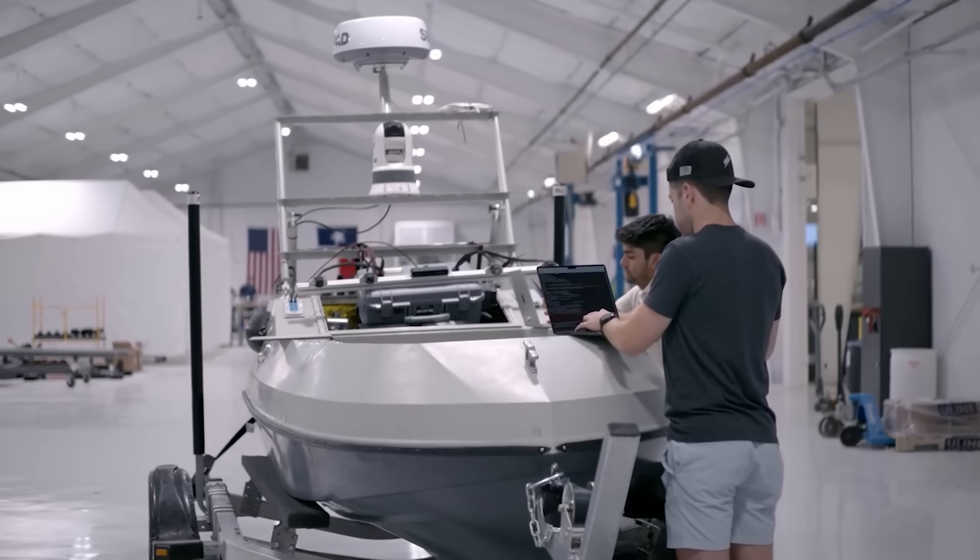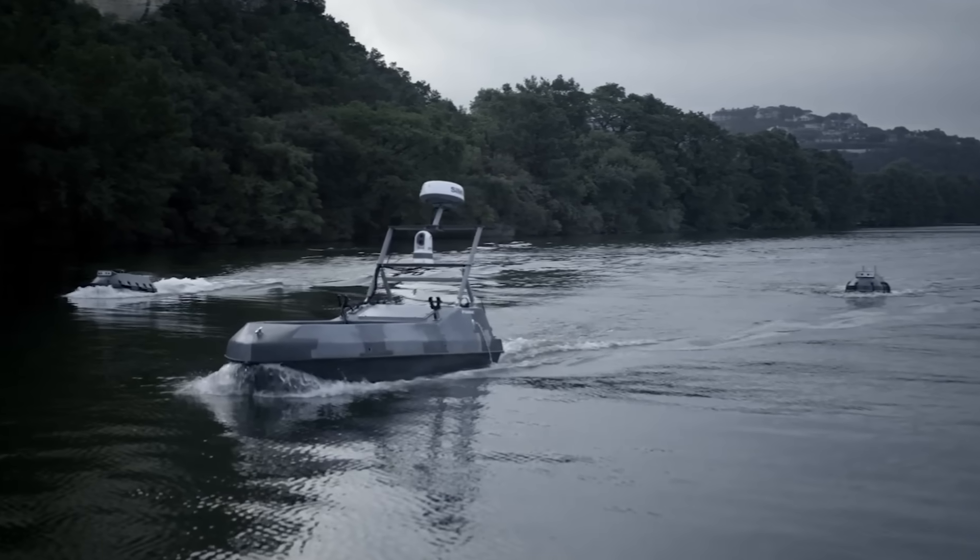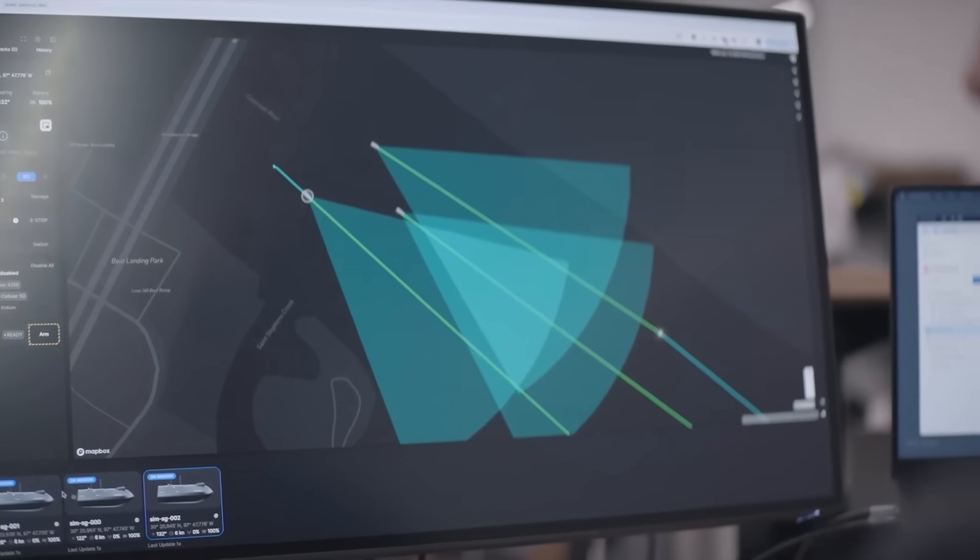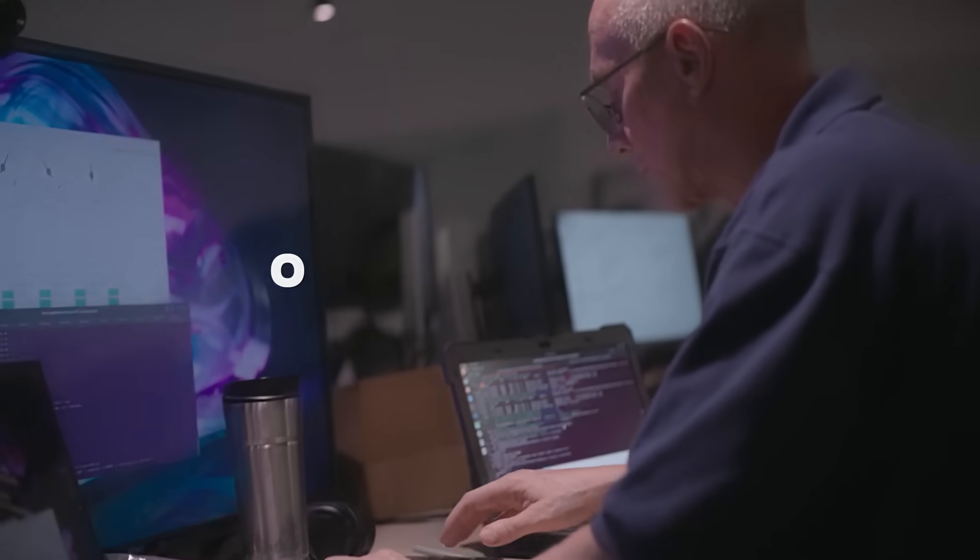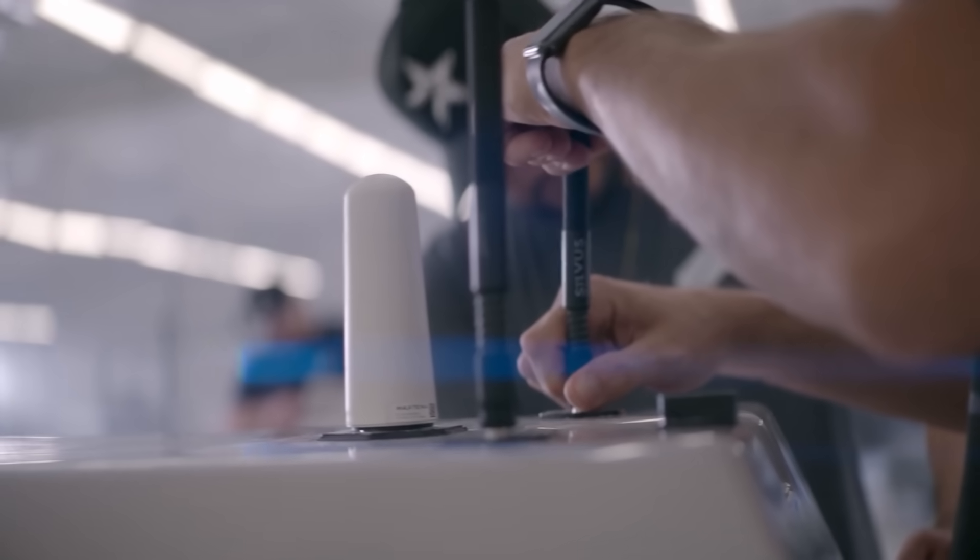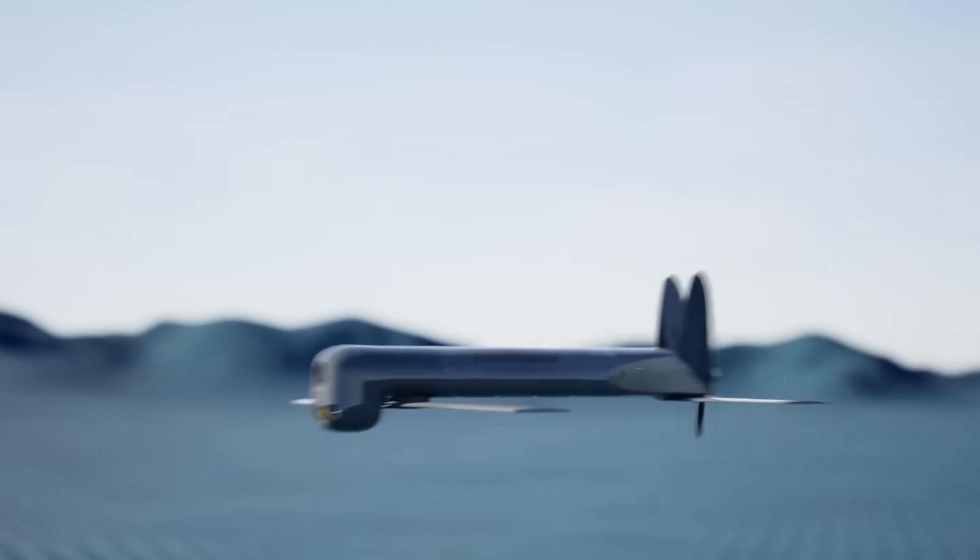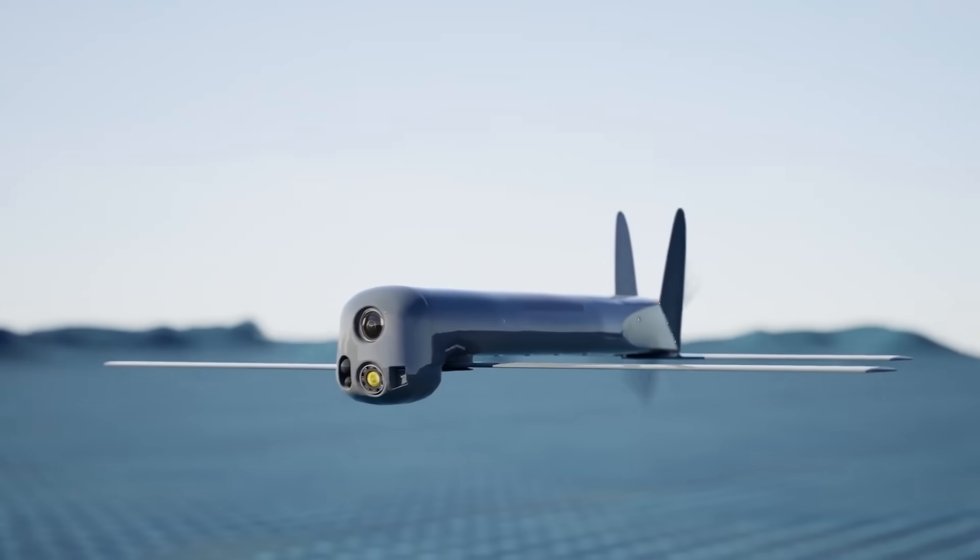What the frame buys you: autonomy with eyesight. Cutlass carries its own mast and radar, so it doesn't just take orders. It sees, tracks, classifies, and holds a target thread without a human babysitter. The brains ride in a microservices stack with open modularity, which means payloads swap like phone apps. EO/IR today, EW tomorrow, loitering munition rack on Friday.